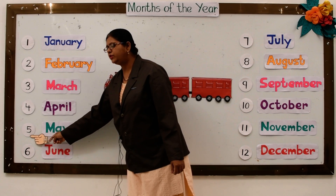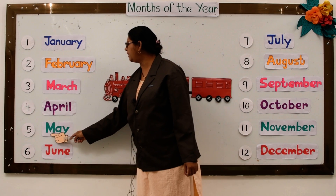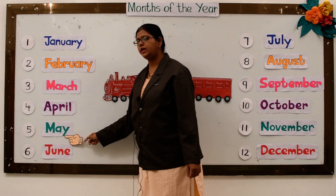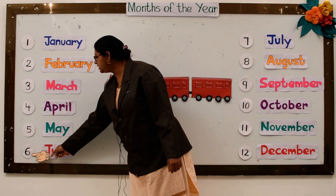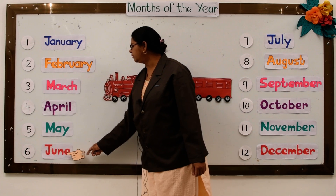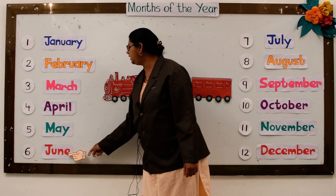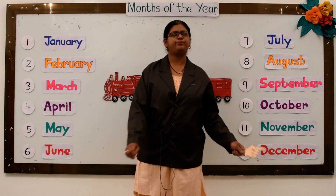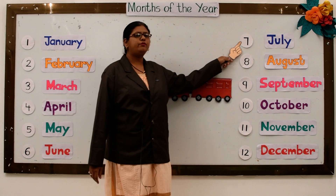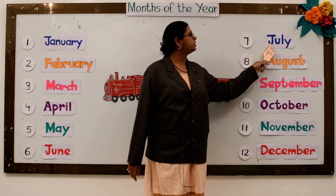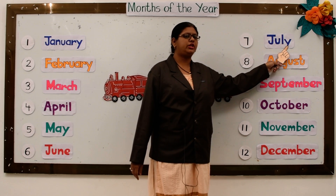The fifth month of the year is May. M-A-Y, May. The sixth month of the year is June. J-U-N-E, June. The seventh month of the year is July. J-U-L-Y, July.